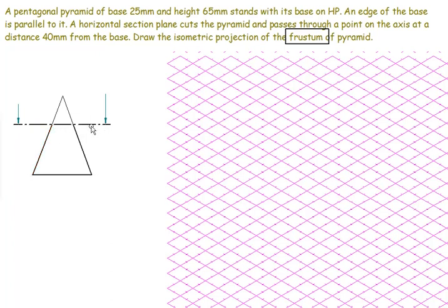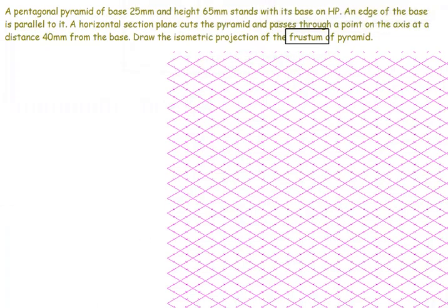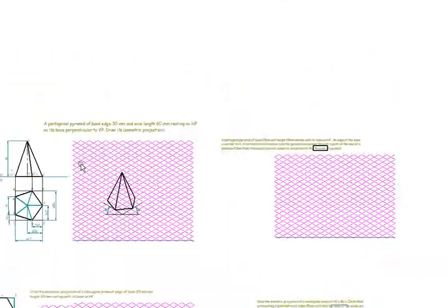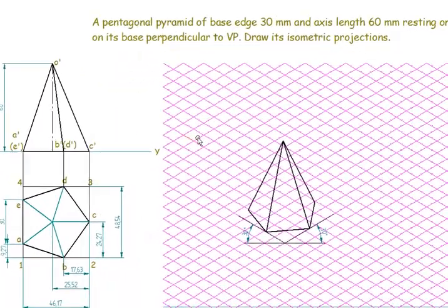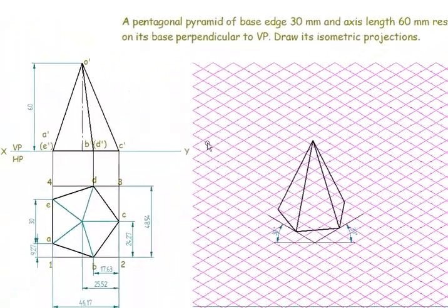These are also called truncated when the section plane is inclined to the base with some inclination. But frustum means the section plane is parallel to the base. In this case, we are going to solve for a pentagonal pyramid. We already solved the pentagonal pyramid without the section plane in the previous class. Now in this class, we are solving for the frustum of the pentagonal pyramid.